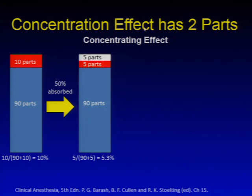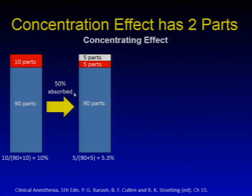The concentration effect has two different parts, the first being the concentrating effect. Consider giving a gas at a 10% mix, where we have 90% of some inert like nitrogen and 10 parts of our inhalational agent. If this gas is absorbed at 50%, we end up with five parts of gas remaining in a mixture of 95 parts of inert, leaving us at 5.3% — down from our initial 10% concentration.